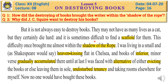But it is sometimes difficult to find a scaffold — gallows — for them. This difficulty, the difficulty of destroying books, once brought me almost within the shadow of the rope — meaning near the gallows. When he was about to throw the books, he saw a policeman there. He thought the policeman might arrest him, thinking he had thrown a baby into the river — that's why he felt himself within the shadow of the rope. I was living in a small and, as Shakespeare would say, heaven-kissing flat in Chelsea.